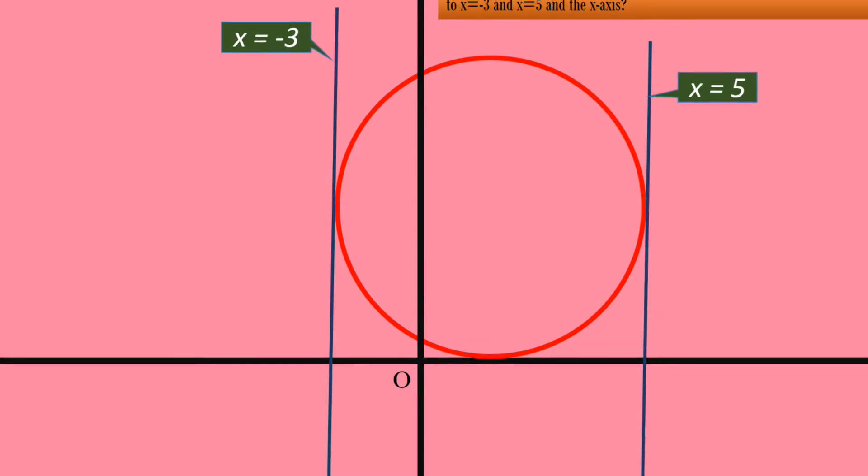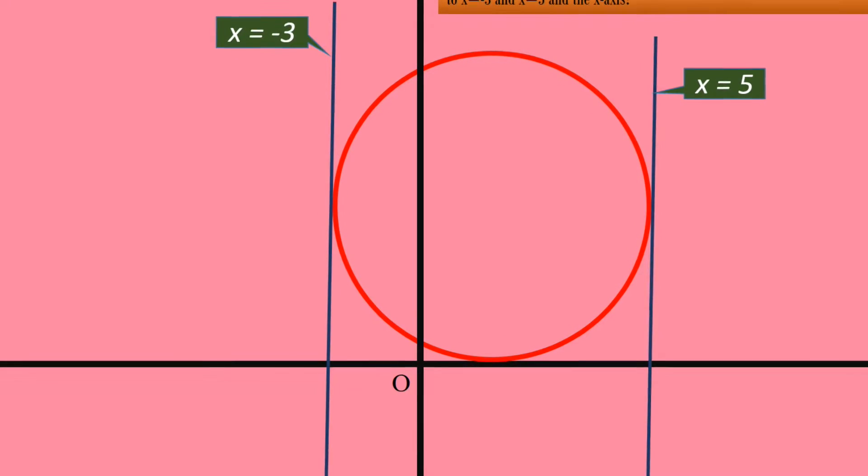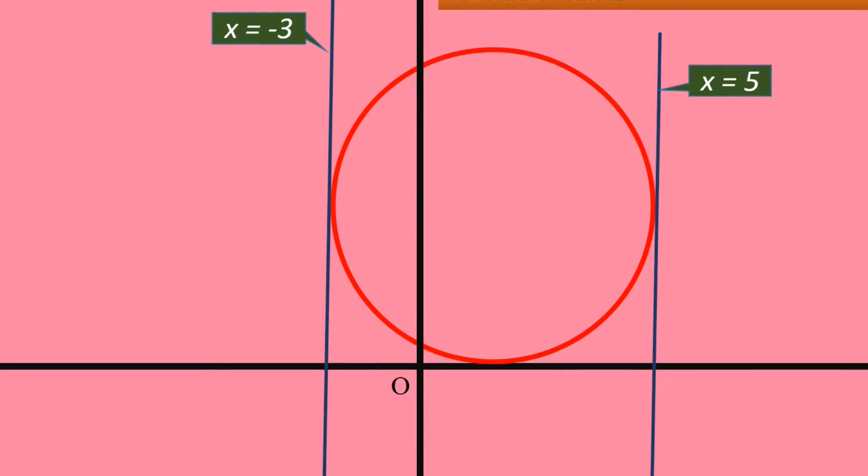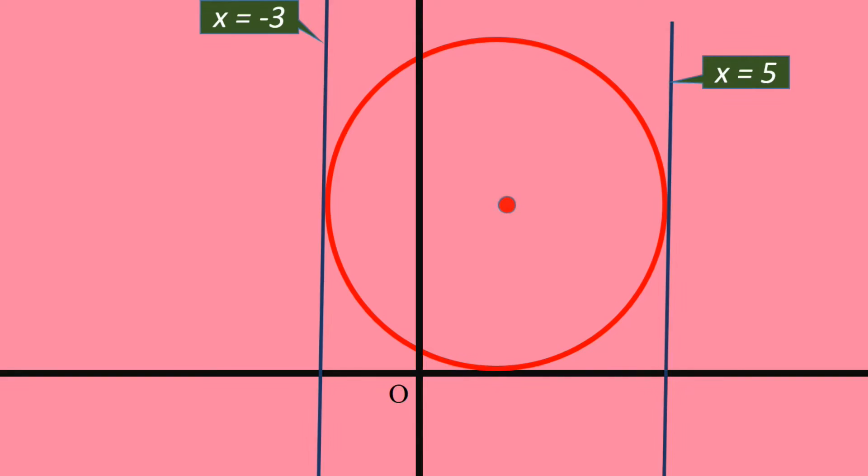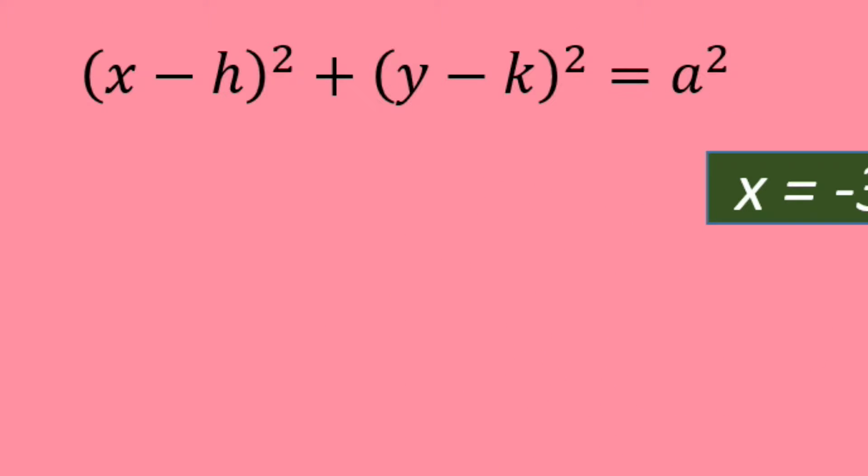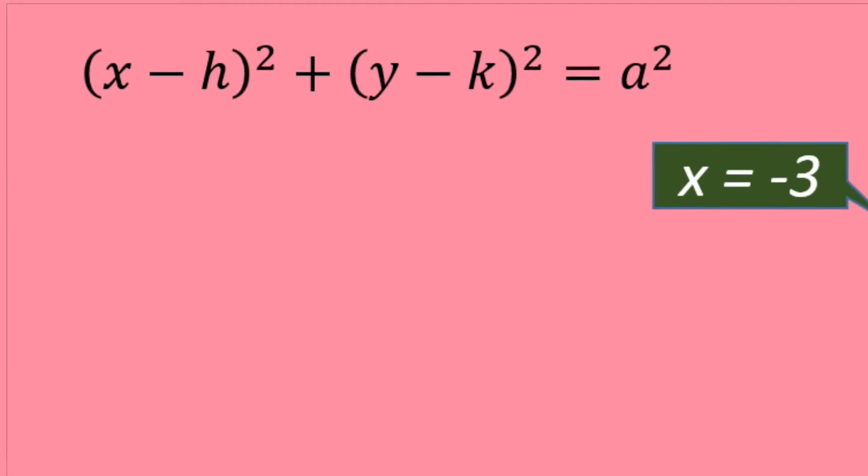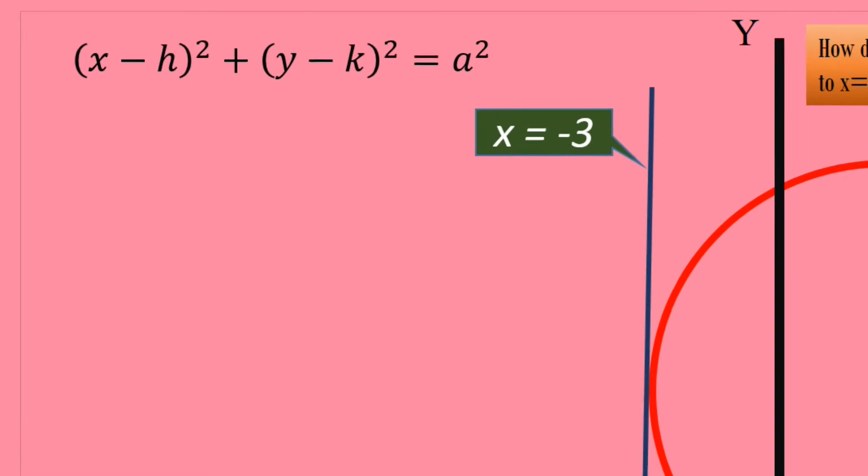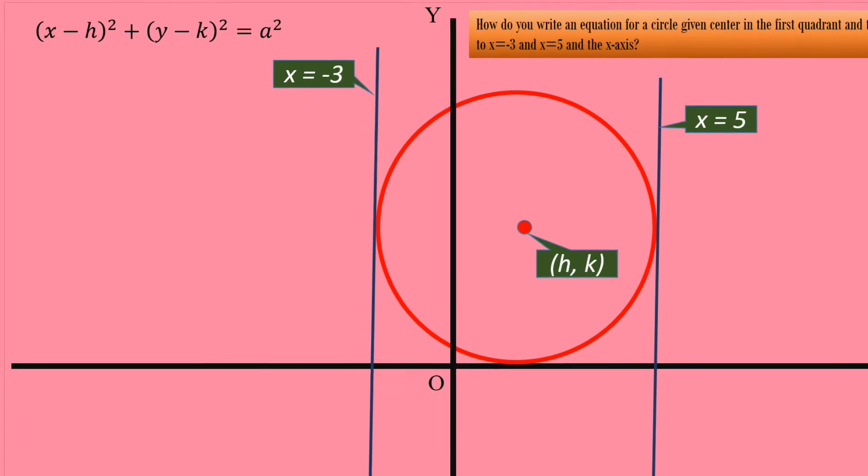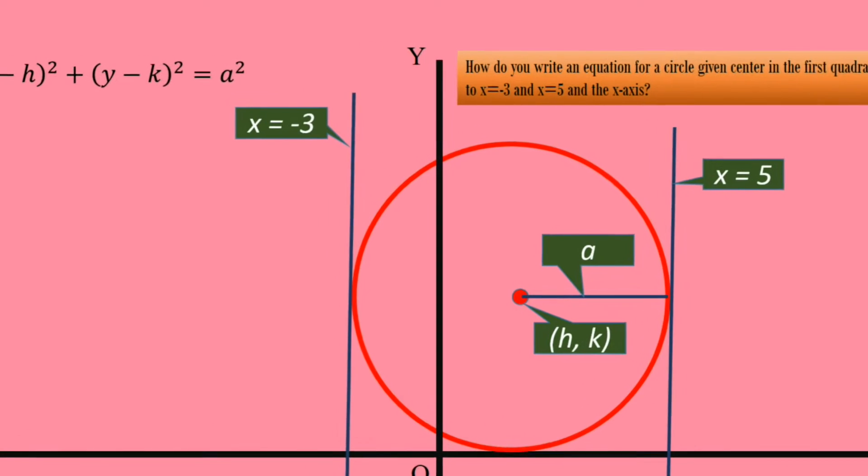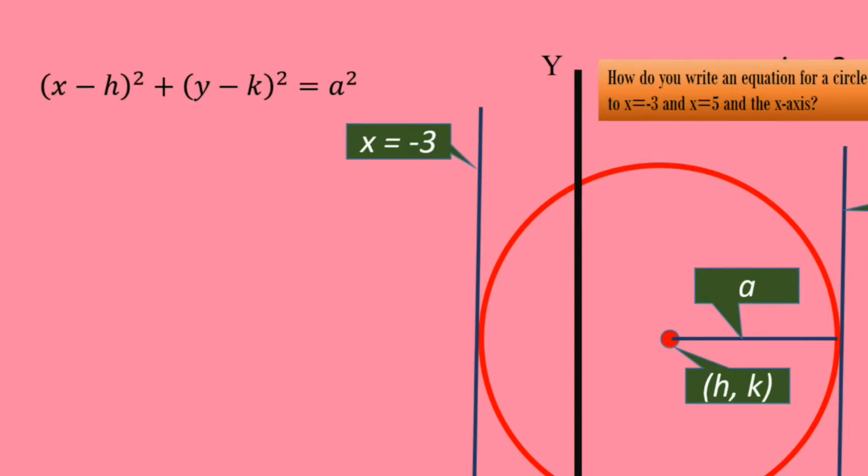With this information, we have to find the equation of the circle. At the very outset, one thing is clear. The center of the circle is not the origin. It is away from the origin. The general form of the equation of a circle whose center is away from the origin is: (x-h)²+(y-k)²=a², where h and k are the coordinates of the center of the circle, and a is the radius of the circle. To write the equation, we have to know h, k, and a.